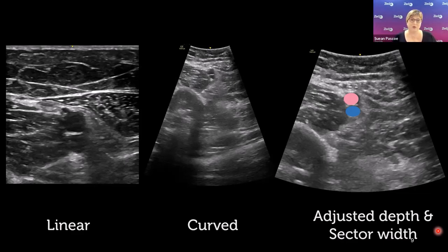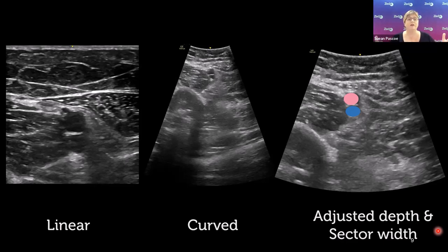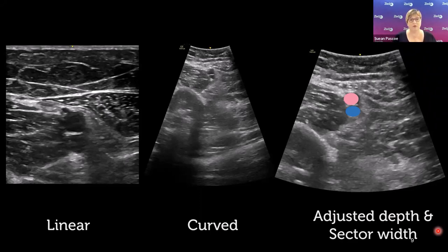Narrowing the sector width also improves resolution: instead of spreading, say, 100 lines of sight across the full sector, those 100 lines are now focused over a much narrower region, giving much better detail of the vessels. You get the advantage of depth penetration from the curved probe's lower frequency, plus improved resolution from the narrower sector width.